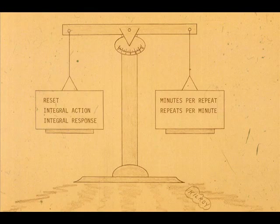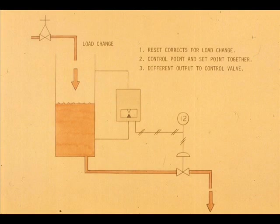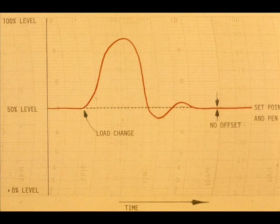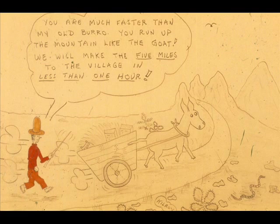There is no change in the measurement units — they are either minutes per repeat or repeats per minute. The addition of reset has allowed our controller to compensate for the load change. Set point and control point coincide; the valve has opened to a different degree. Whereas after a load change the response curve for our proportional controller looked like this, the addition of reset will make it look like this. Reset has corrected for the load change.